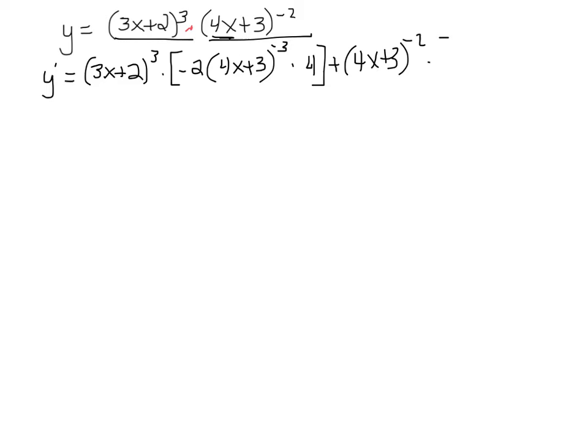of the first one, which would be bring the 3 down, leave the inside alone, subtract 1, times the derivative of the inside which is 3x, so I get 3. Now I can write this a little better. I see I have minus 2 times 4 is minus 8, and I'm going